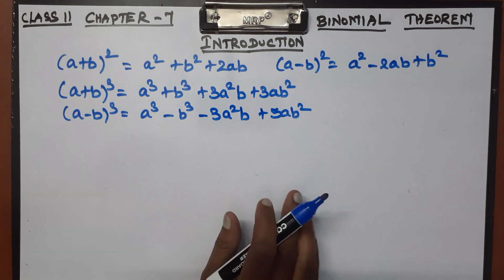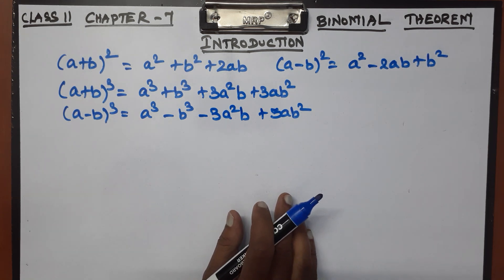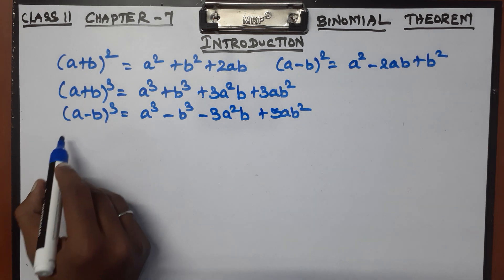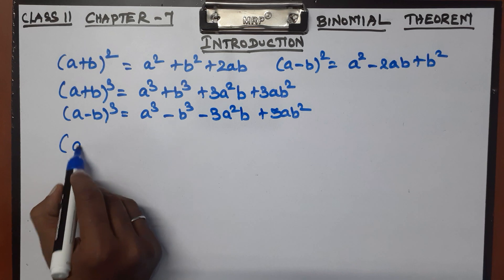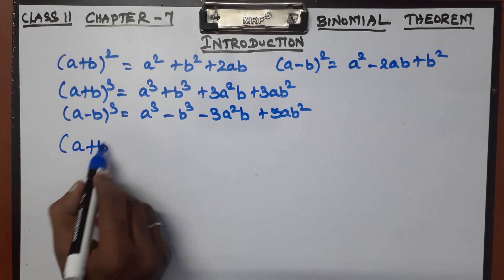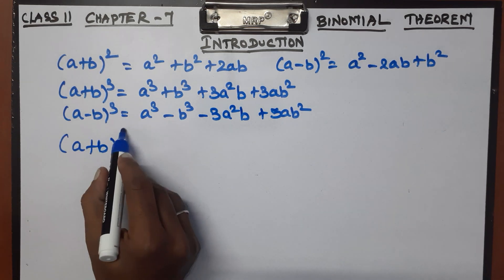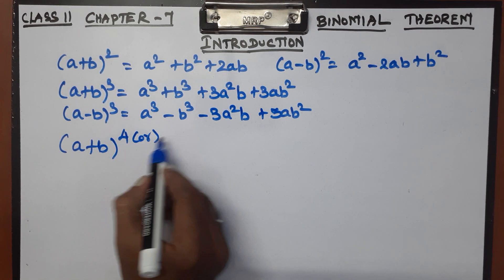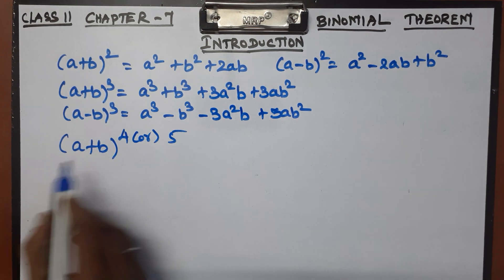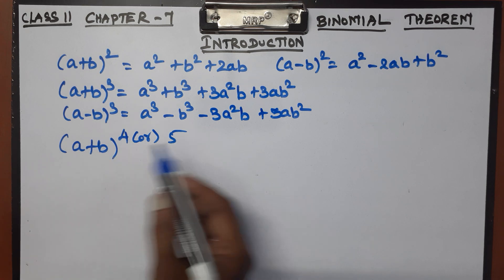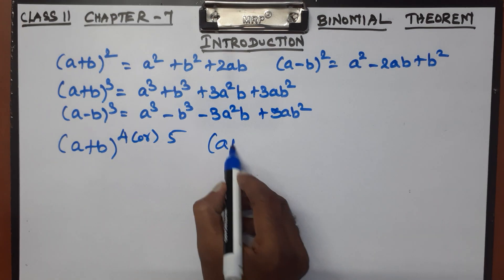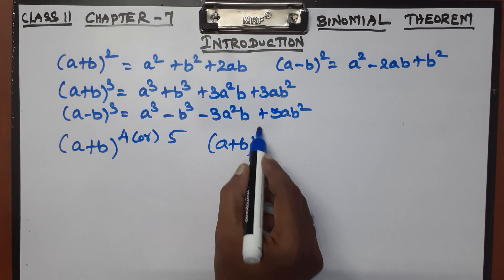Now, Binomial Theorem. The key idea is higher powers — for example, (a + b) to the power 4, 5, 6, 7, or even (a + b) to the power 10. How do we handle those?